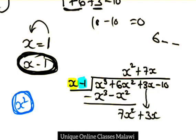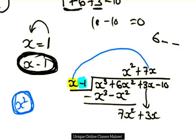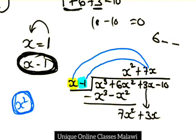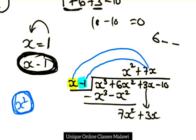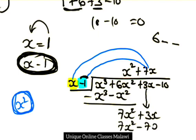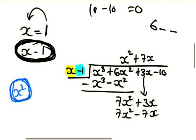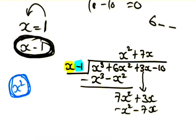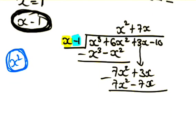7x squared divided by x gives 7x. 7x times x is 7x squared, and 7x times minus 1 is minus 7x.